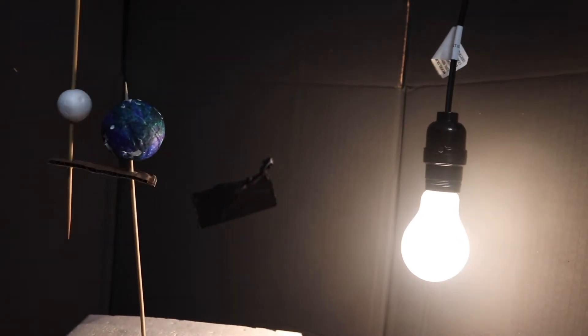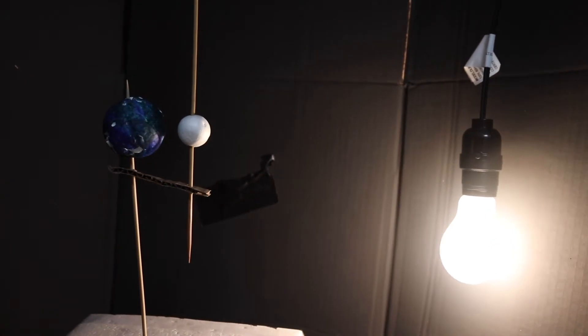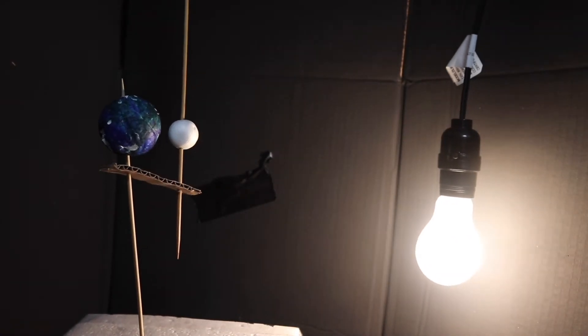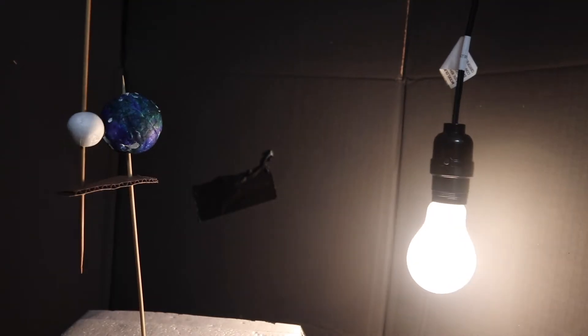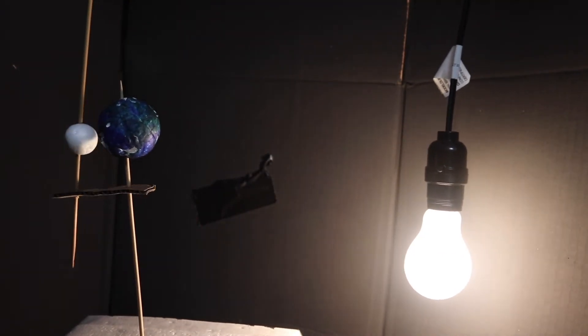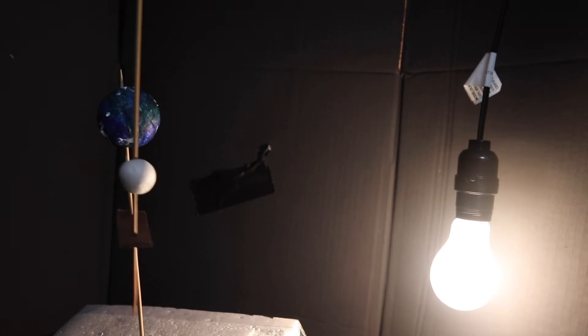The moon orbits the Earth at a rate of 27.3 days, meaning we go through the eight phases of the moon about every four weeks. This rate being slightly less than a month also allows a blue moon, or two full moons in a month, to occur.